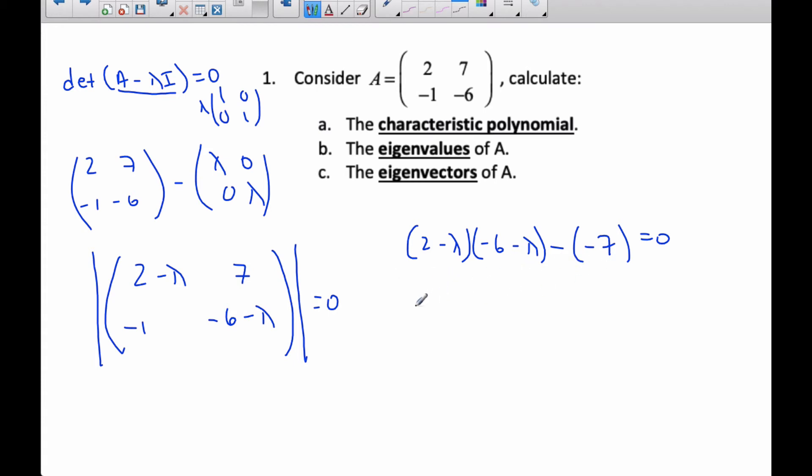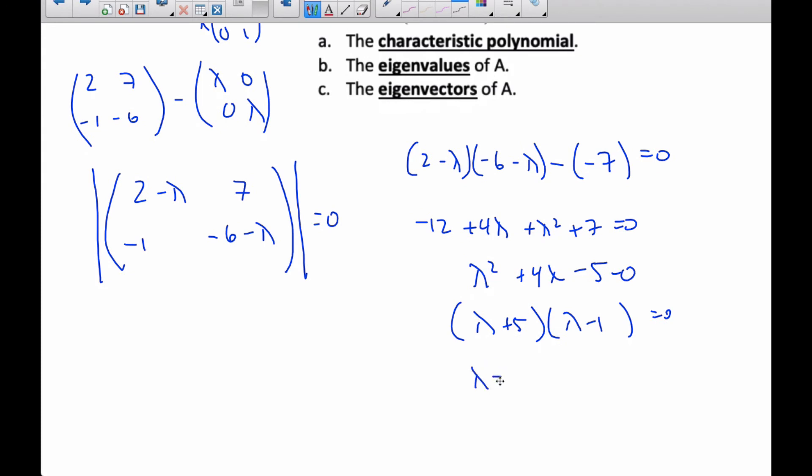And so, now I just do some algebra on there. I get negative 12 minus 2 plus 6 is plus 4 lambda. And then lambda squared plus 7 is zero. And so, lambda squared plus 4 lambda minus 5 is zero. I factor my equation. And I know that I have to get a plus 5 and a minus 1 equal to zero. And so, lambda equals negative 5, and lambda equals 1. And so, these two values here, these are my eigenvalues. These are my eigenvalues. And this is my characteristic polynomial. My characteristic polynomial.